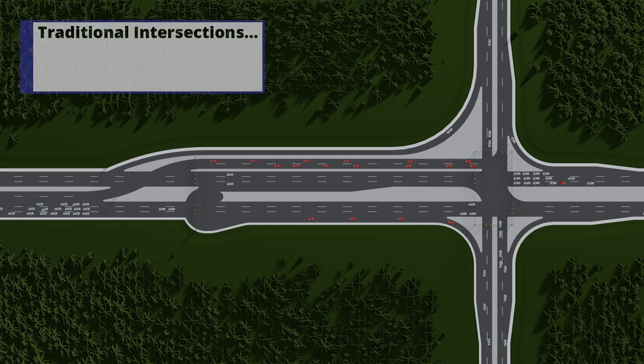Traditional intersections utilize a single traffic signal system with multiple signal heads to direct the various traffic movements that can occur at an intersection: right turns, left turns, and through movements.